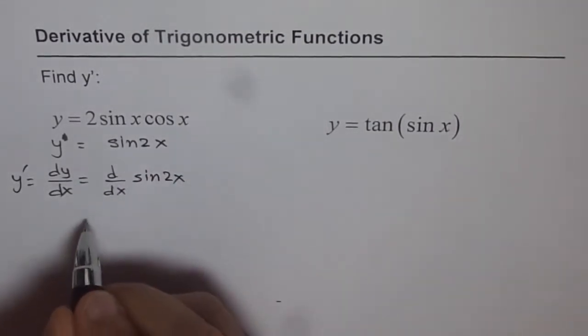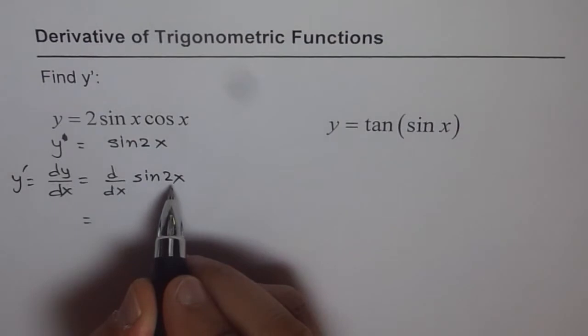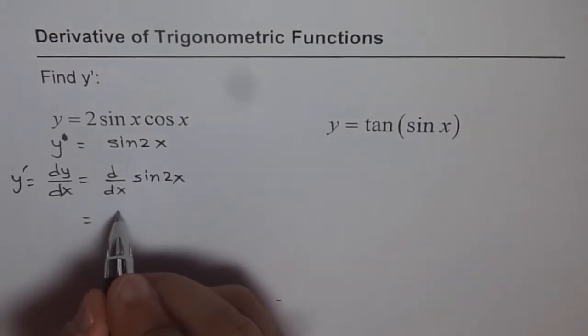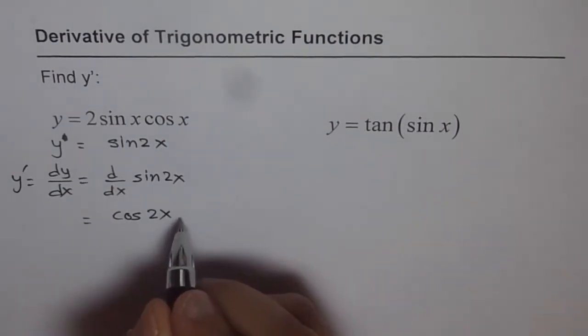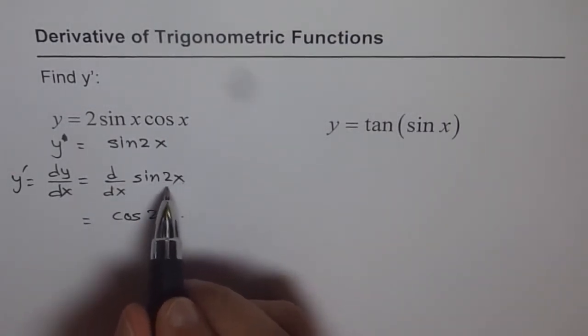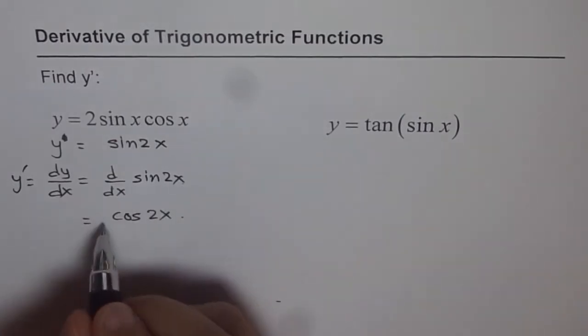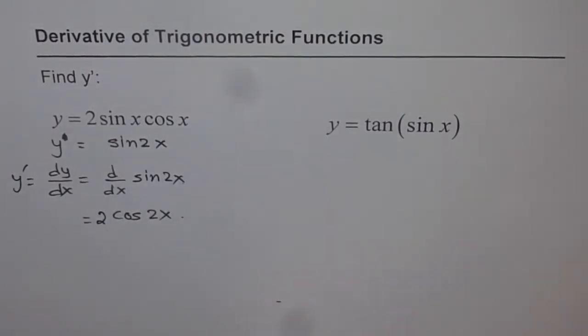Sin 2x. So we get differential of sin theta is cos theta. So we get cos theta or cos 2x times derivative of this function, which is 2x. The angle theta itself, which is 2. So I can multiply by 2 here and write down my answer.